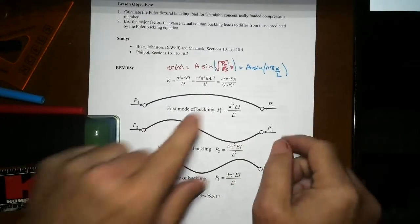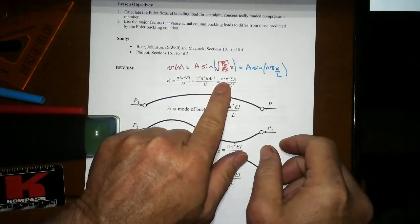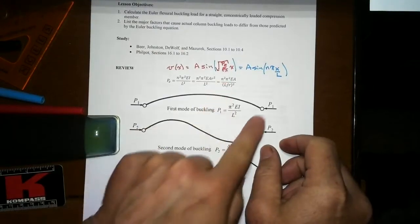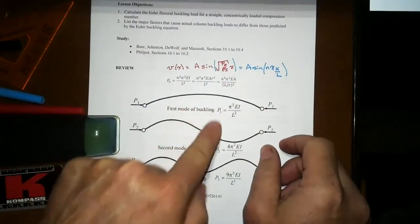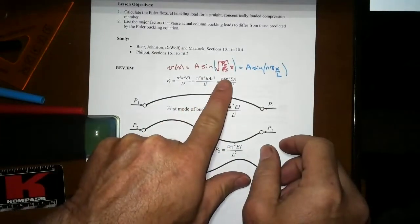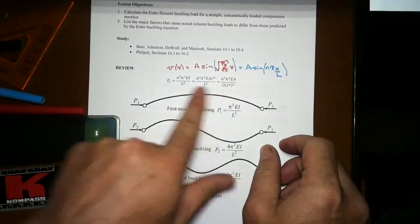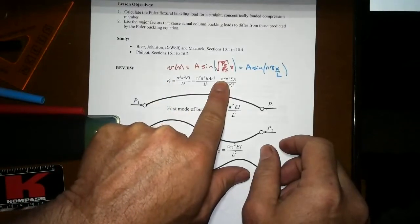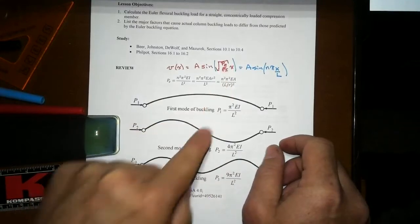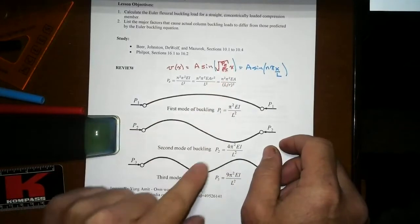Now, the other critical piece of this is note that not only does that n value change over the length of the member what the deformed shape looks like in terms of increments of half sine waves, but it also changes the magnitude of the load in a big way, not just a little way. One to two is not twice as much. It is four times as much because there's an n squared.